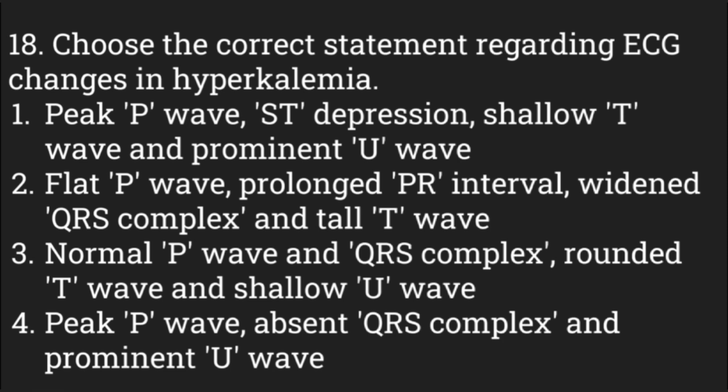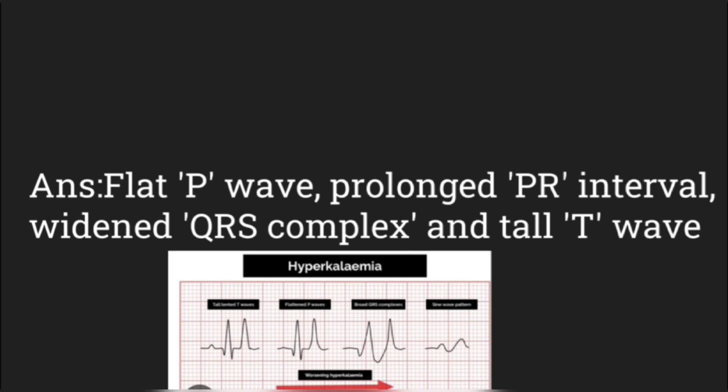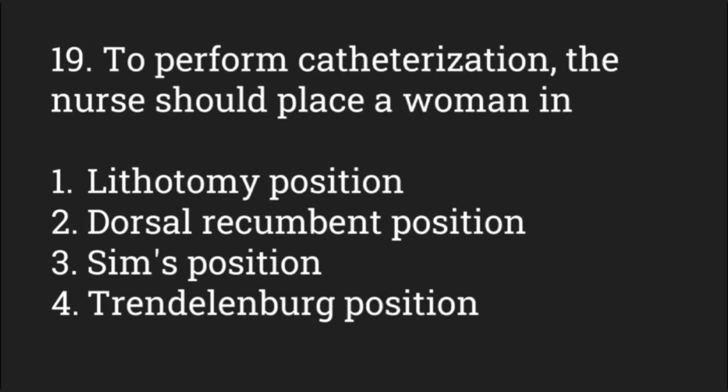Choose the correct statement regarding ECG changes in hyperkalemia. Options include: peaked P wave, ST depression, shallow T wave, prominent U wave; flat P wave, prolonged PR interval, widened QRS complex, and tall T wave; normal P wave and QRS; rounded T wave and shallow U wave; absent QRS complex. The answer is flat P wave, prolonged PR interval, widened QRS complex, and tall T wave — as seen on the ECG tracing.